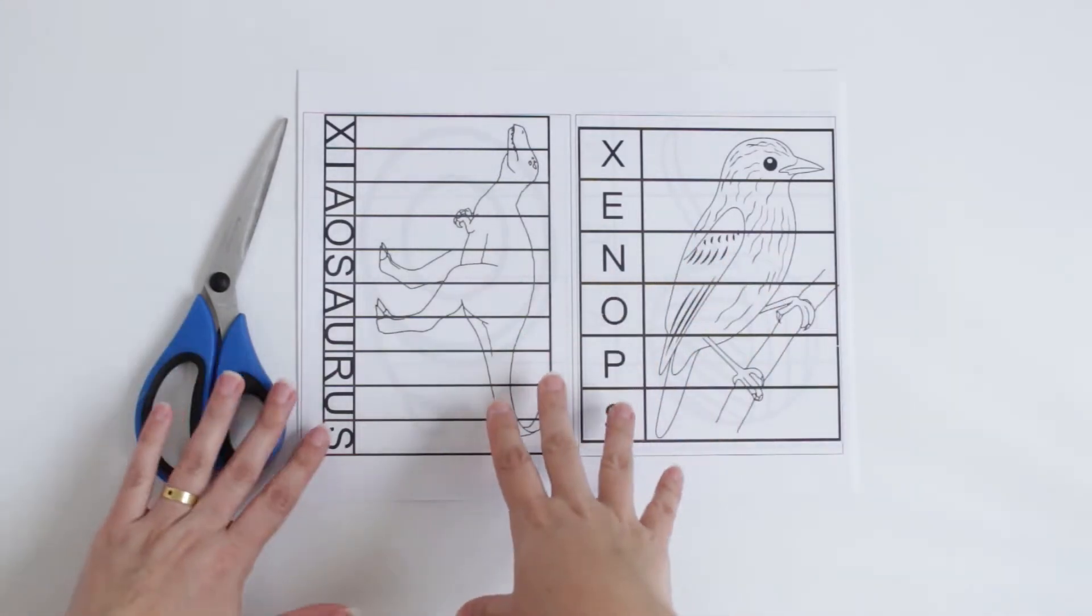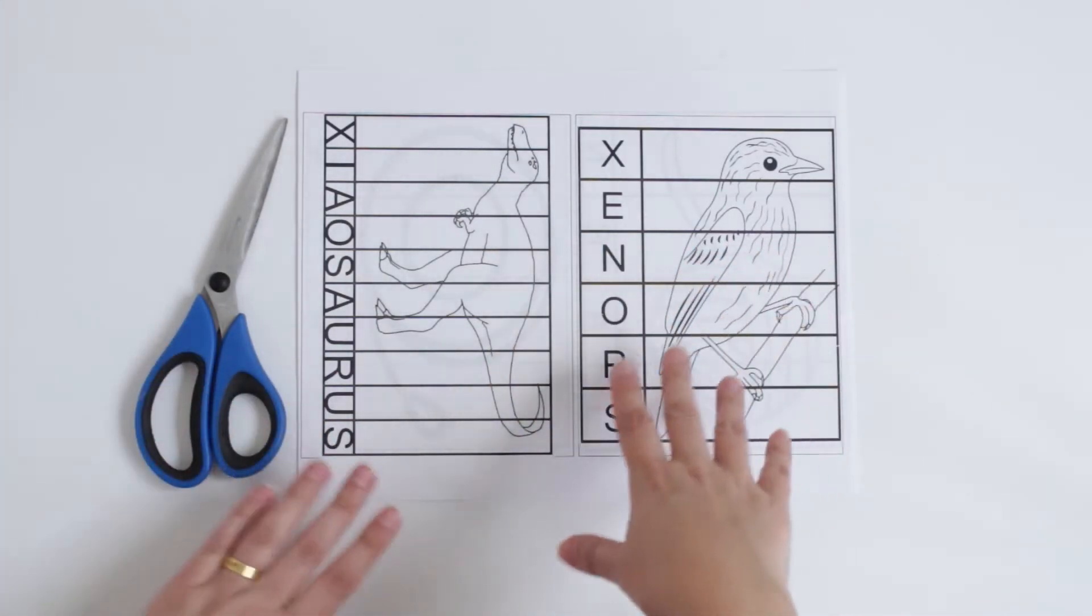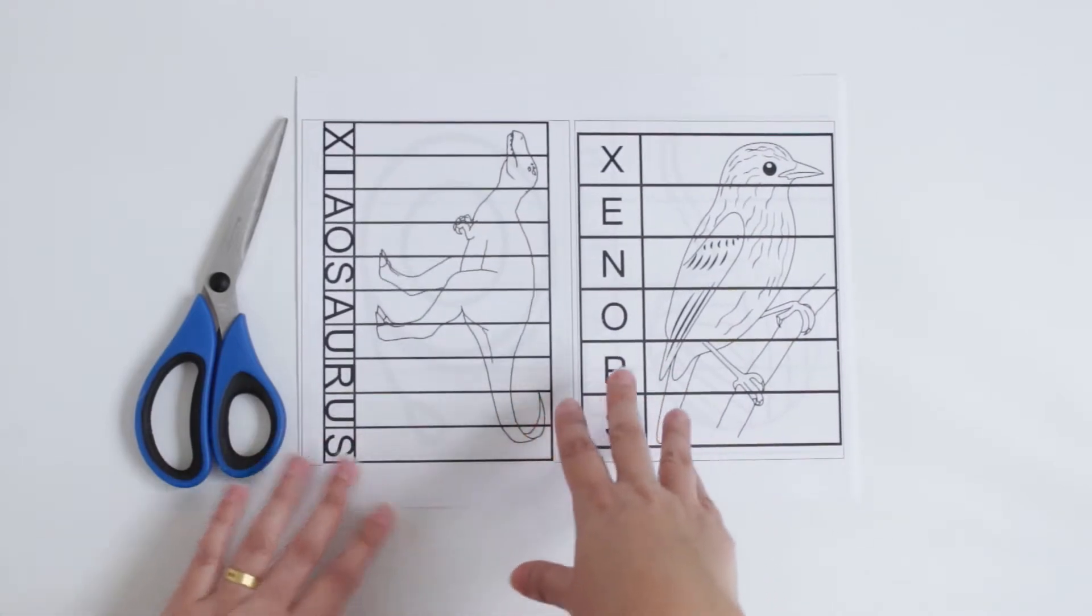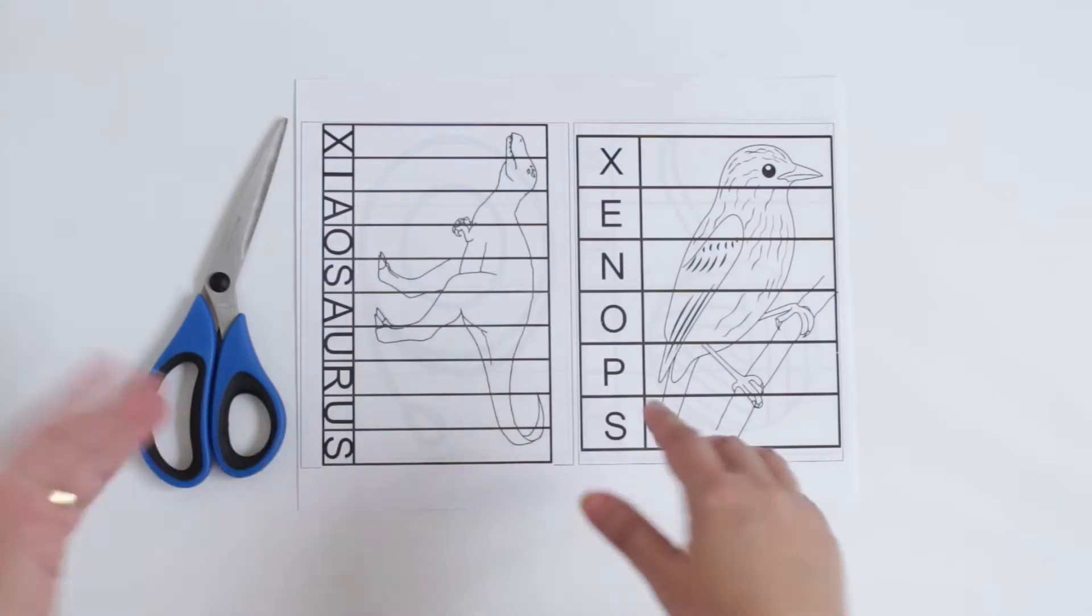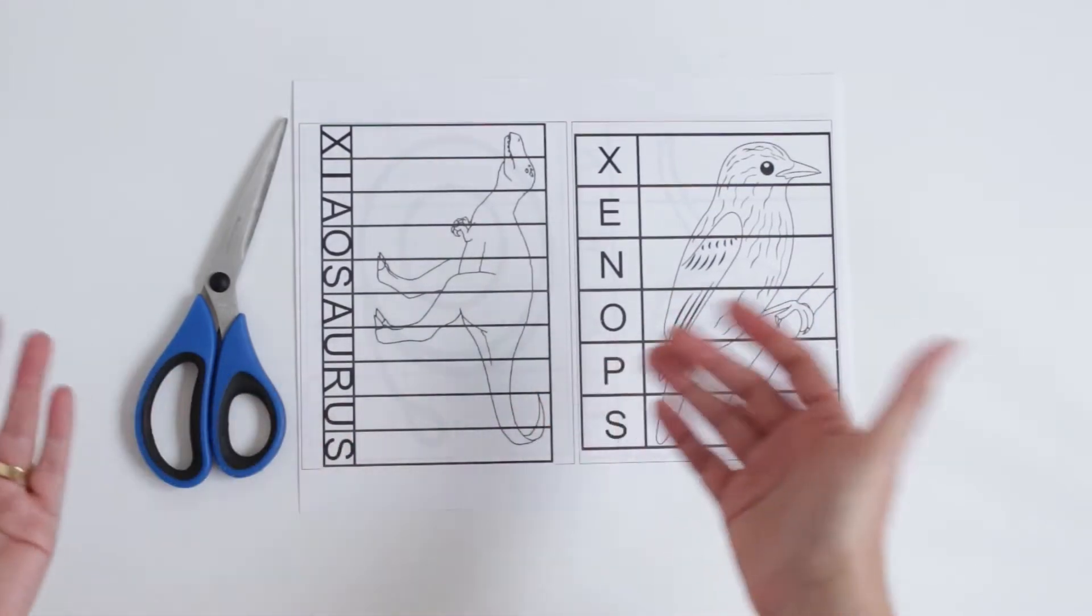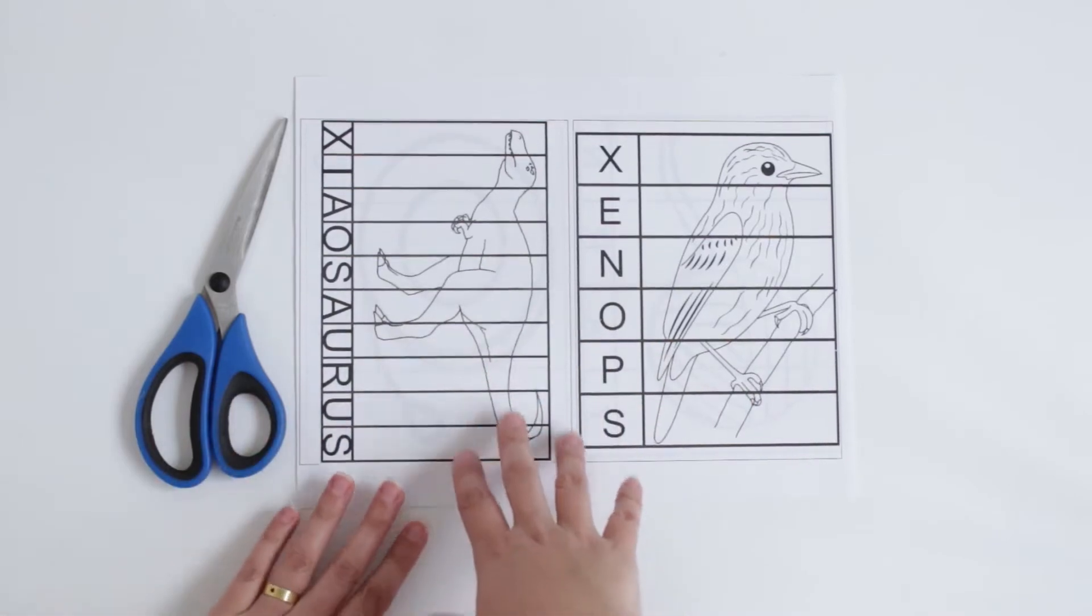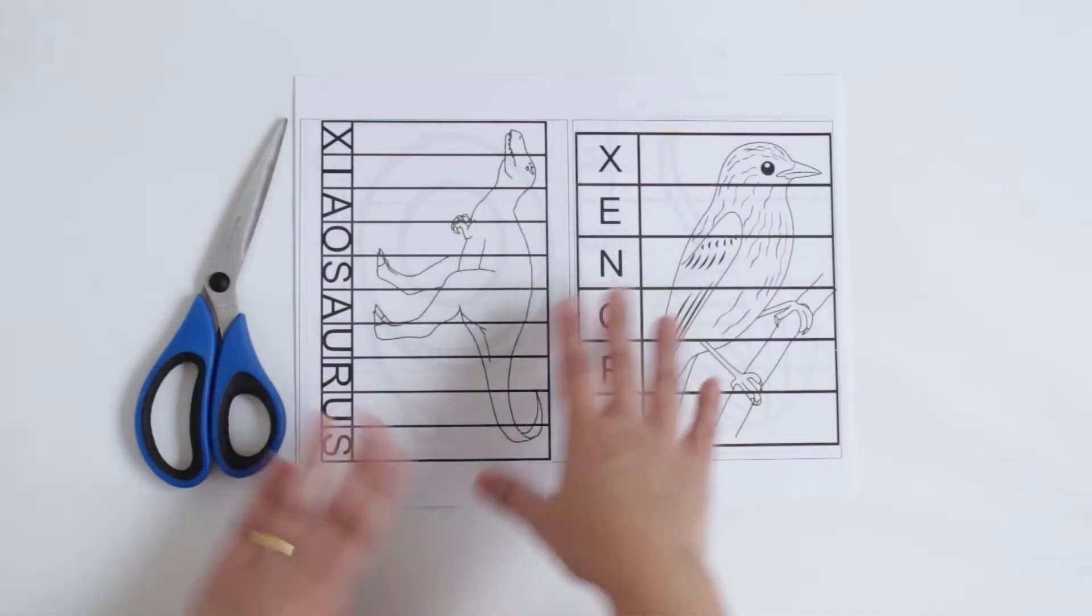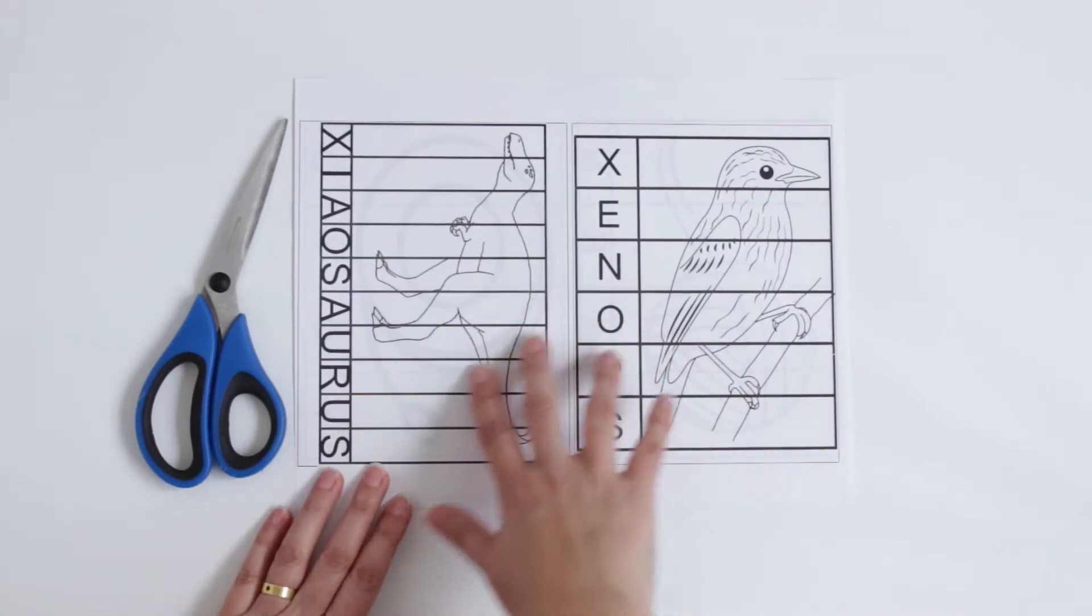Hello, welcome to one more video. In this video I'm going to show you an activity to do with your kids using words that start with letter X. Those words are not so simple, but that's okay. You just need to show your kids some words that start with letter X.